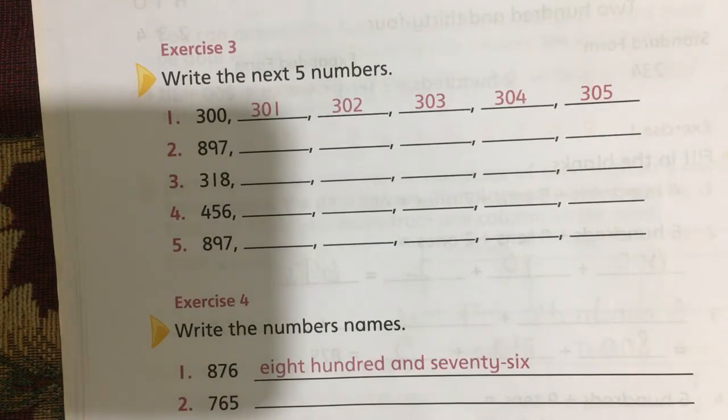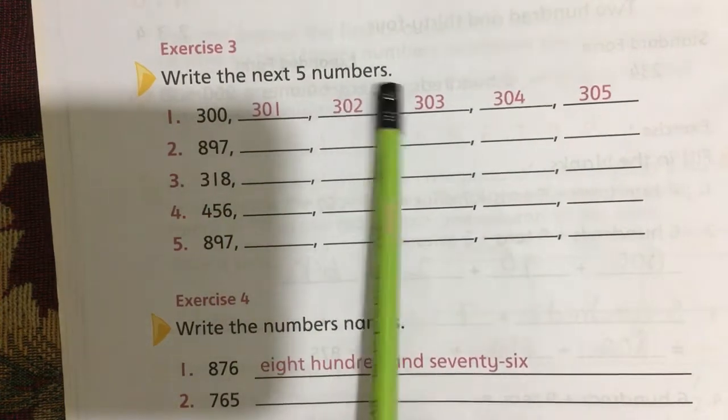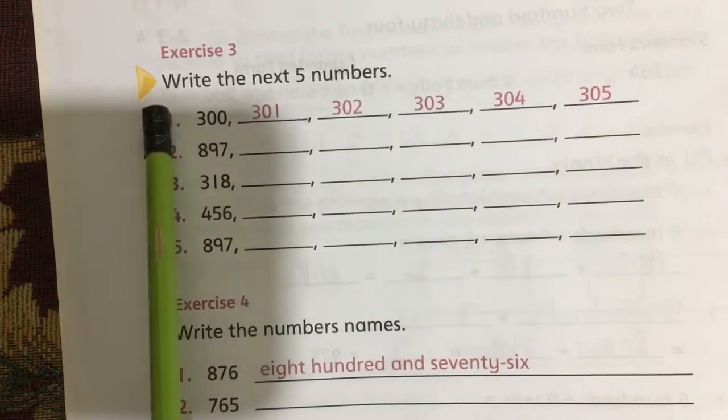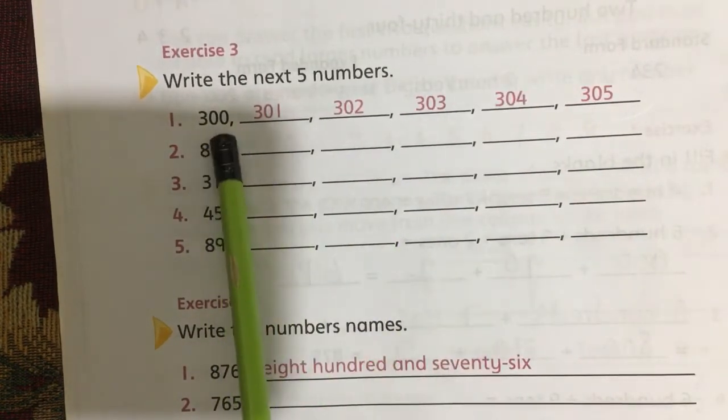Assalamu alaikum, grade two. Today we will solve Exercise Number 3 of Unit Number 2, which is 'write the next five numbers.' They have solved the first question. Then we will solve the second, third, fourth, and fifth questions.